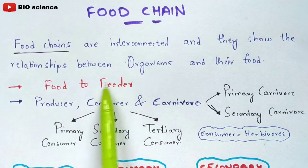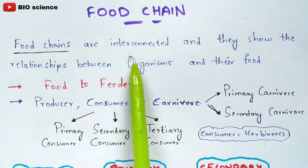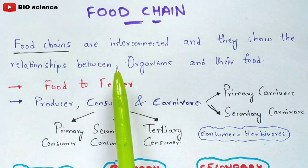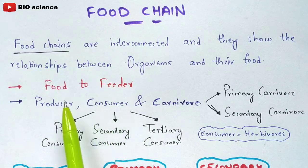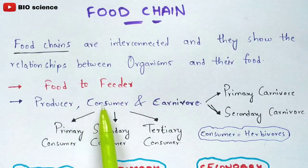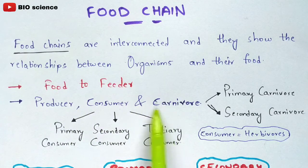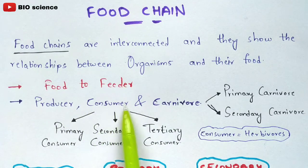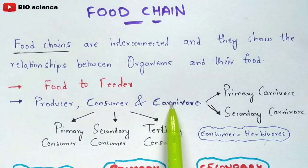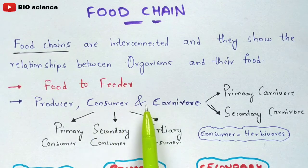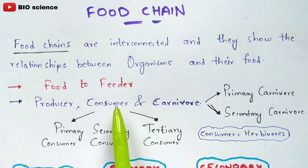The food chain begins with the food and ends with the feeder. There are actually three trophic levels: producer, consumer, and carnivore. The other name for consumer is herbivore. So producer, consumer or herbivore, and carnivore — these are the three trophic levels which can be seen in the food chain.